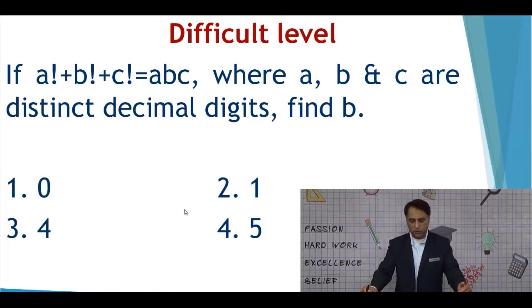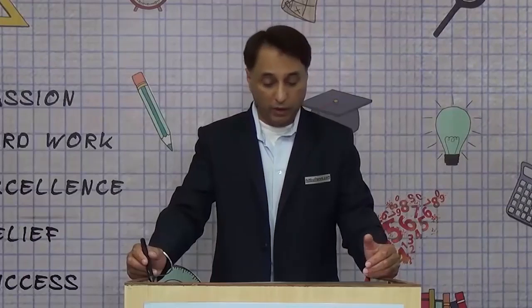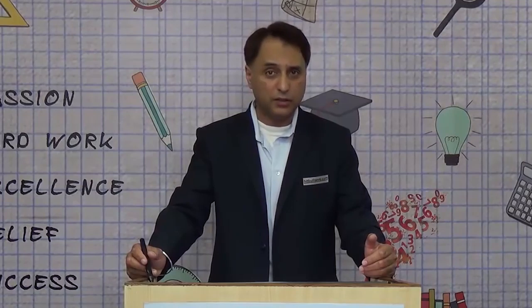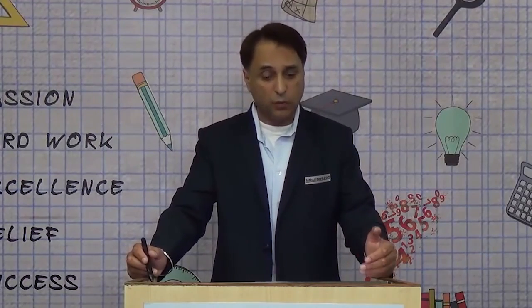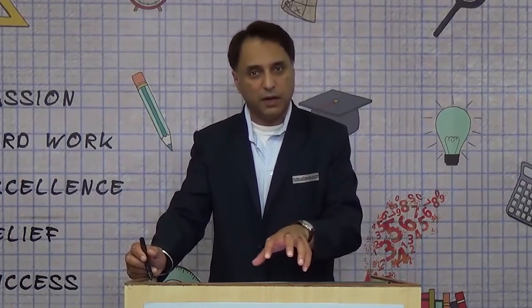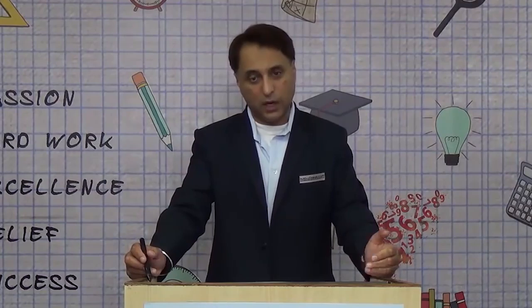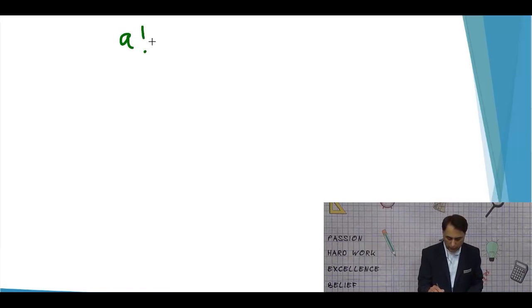Most students would be lured to attempt this question because of its short length — just two lines to read. Wherever the reading effort is less, students tend to attempt it. However, these two lines put you through a lot of challenge, as it's not easy to find B at first glance. Most students find an apparent insufficiency of data, spend time on it, then pull out — increasing their opportunity cost. The ones who apply the right strategy, however, are able to reach the answer.